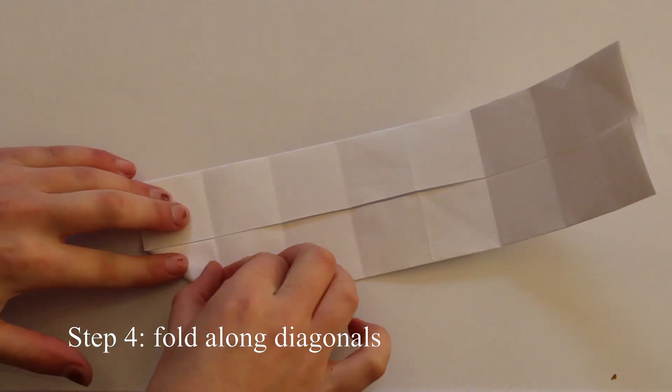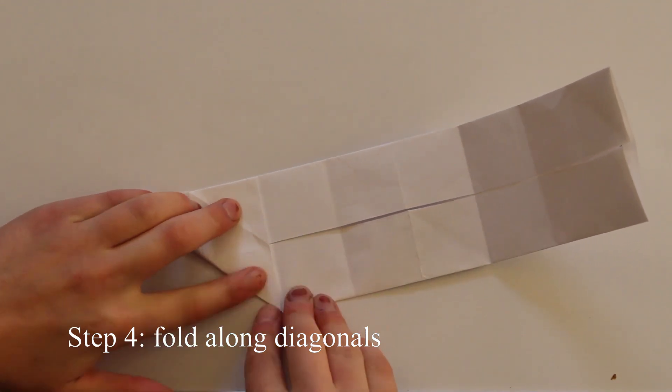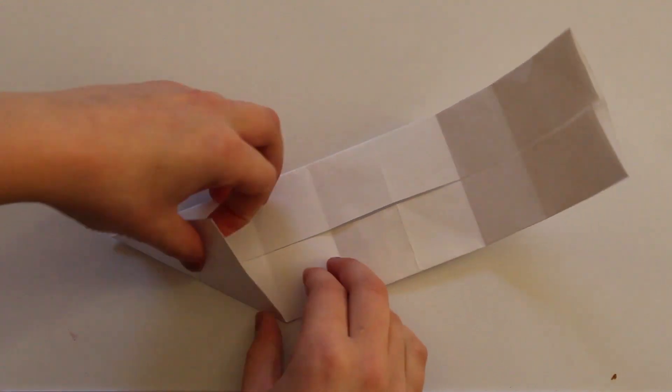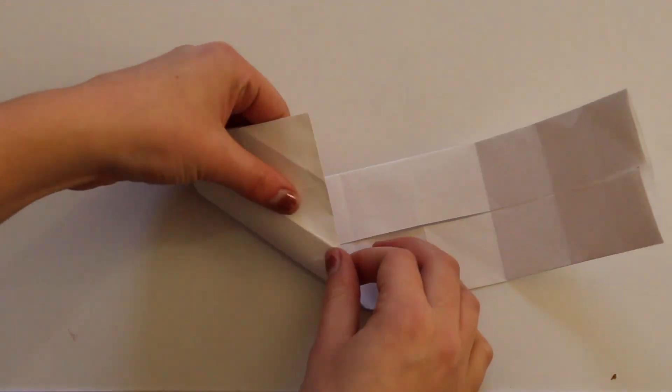So you can do this by bringing the bottom edge of your strip to match up with a vertical line that you have folded. That's kind of a terrible description but hopefully you can see what I'm doing. And I'm just going to do this all along the strip.